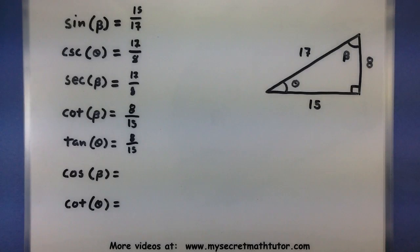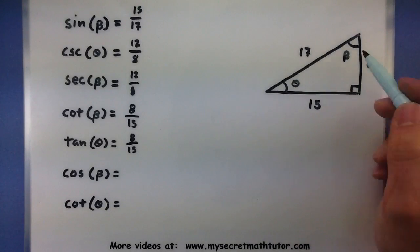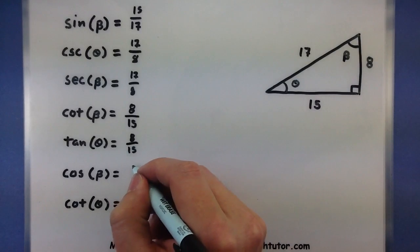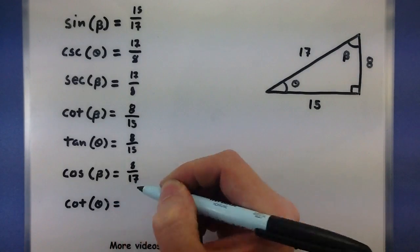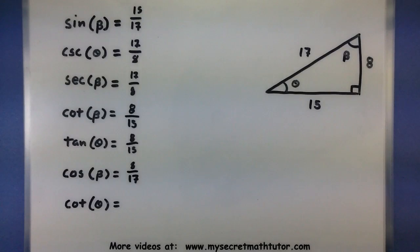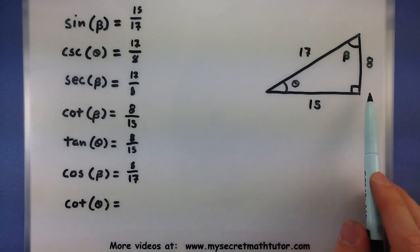It looks like two more to go. Okay, so cosine of beta, adjacent over hypotenuse, and cotangent of theta. So here's my theta, adjacent over opposite.